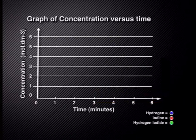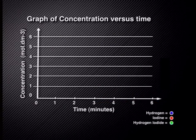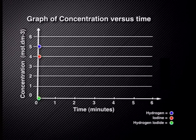Let's mark these on the vertical axis of the concentration versus time graph. The hydrogen is marked in blue at five, the iodine in red at four, and the hydrogen iodide in green at zero.